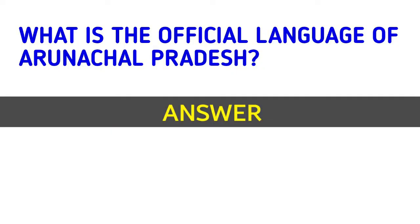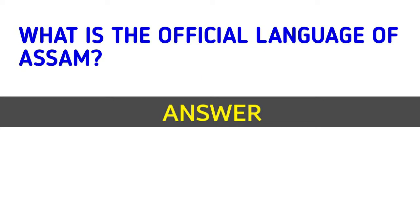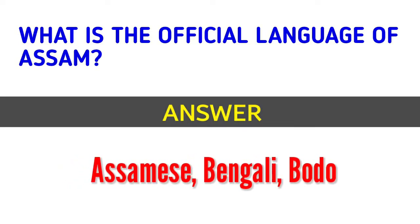What is the official language of Arunachal Pradesh? Answer: English. What is the official language of Assam? Answer: Bengali and Bodo.